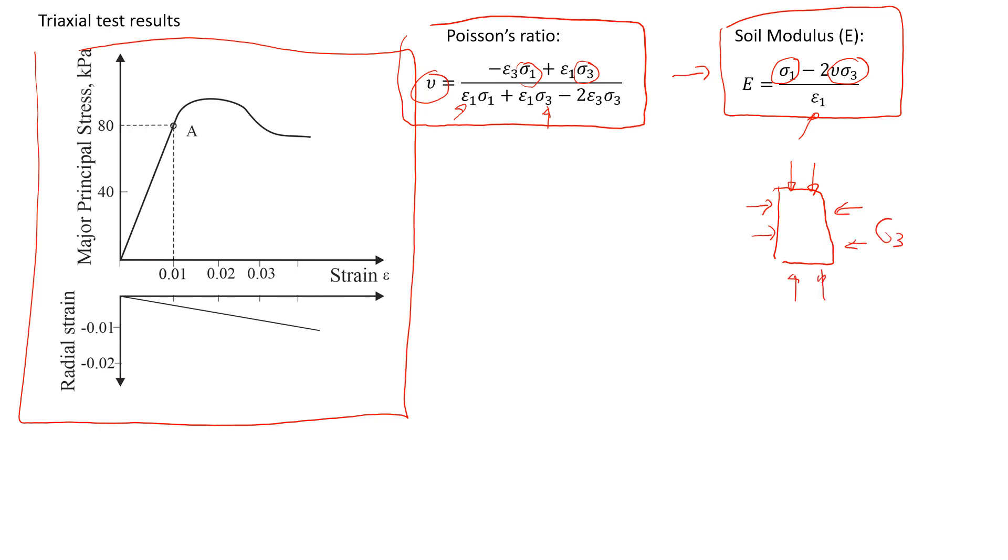In this case, for this particular case, sigma3 was 30 kPa. So we apply sigma3, which is 30, and consolidate the sample. After that we apply deviator stress, sigma1. Then we apply the stress until soil fails.